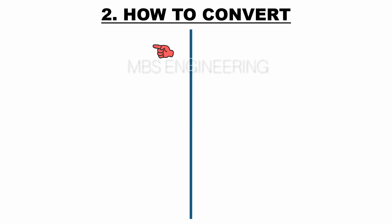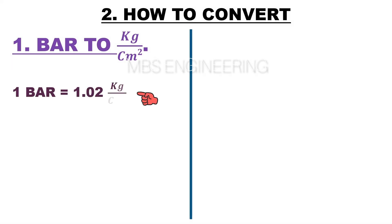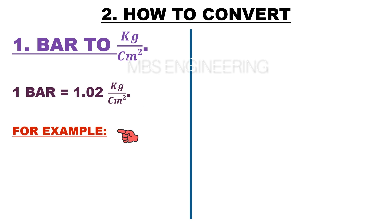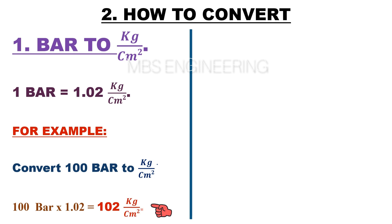Next, we will learn the second topic: how to convert bar to kilogram per centimeter square. Please remember that one bar is equal to 1.02 kilograms per centimeter square. Sample example: convert 100 bar to kilogram per centimeter square. 100 bar multiplied by 1.02 — therefore the obtained pressure value is 102 kilograms per centimeter square.